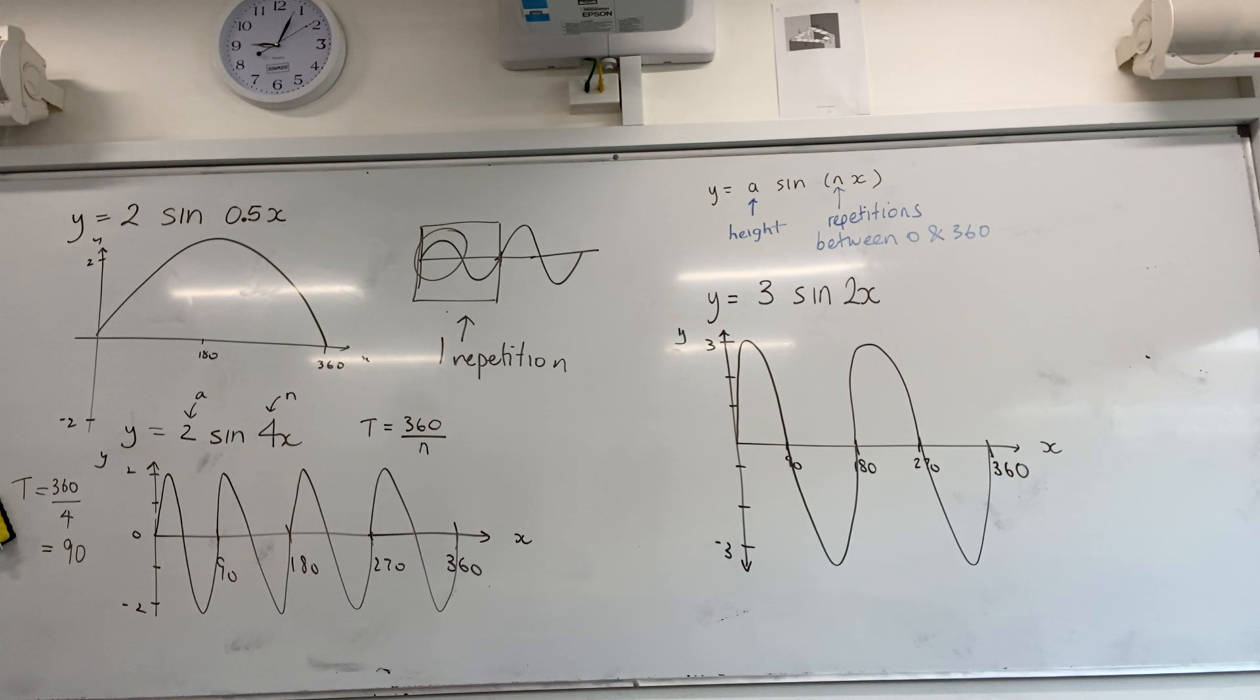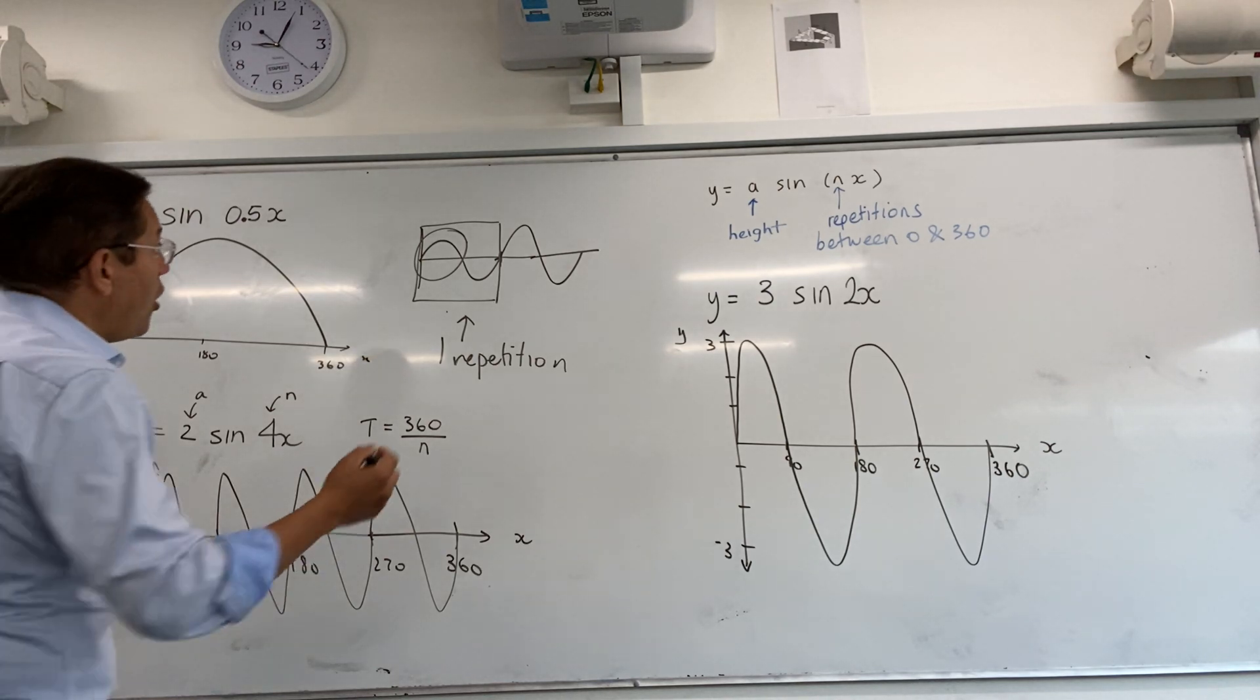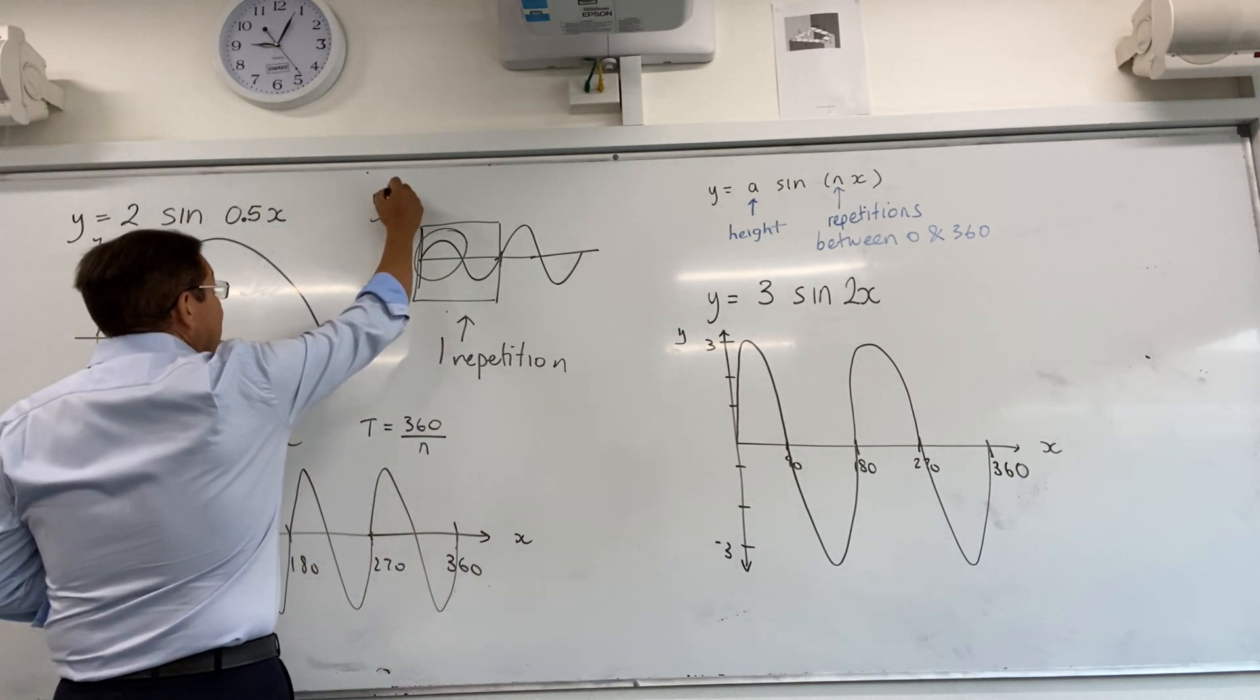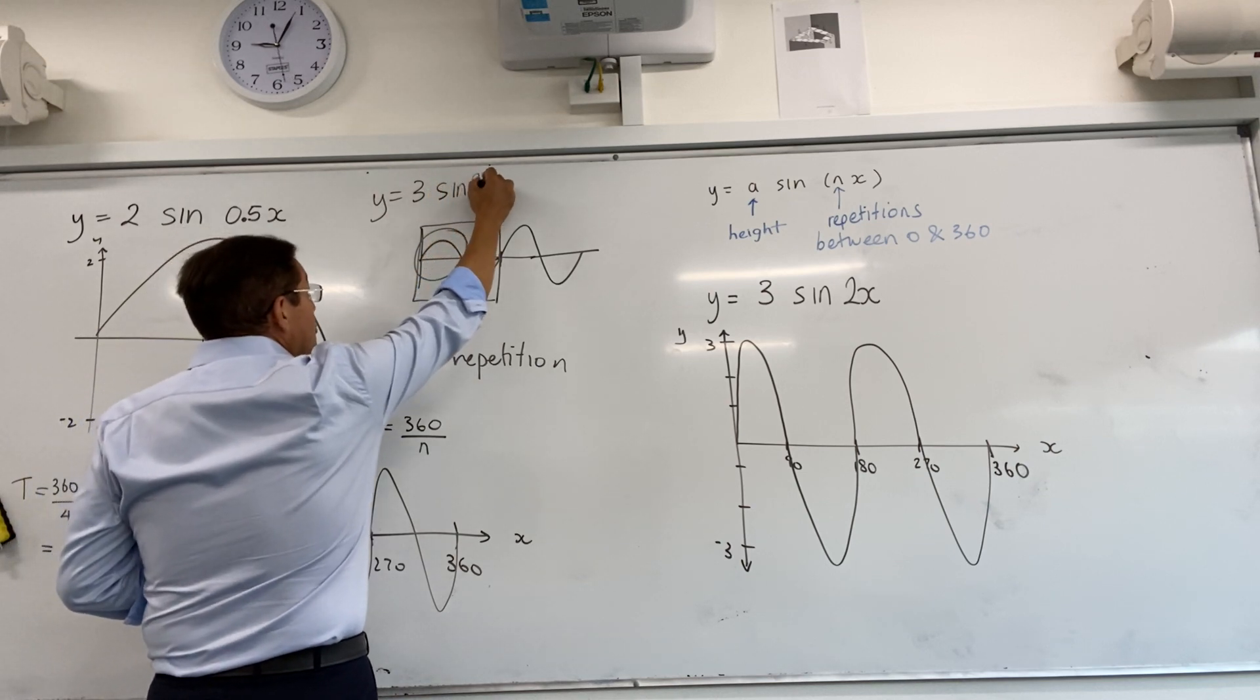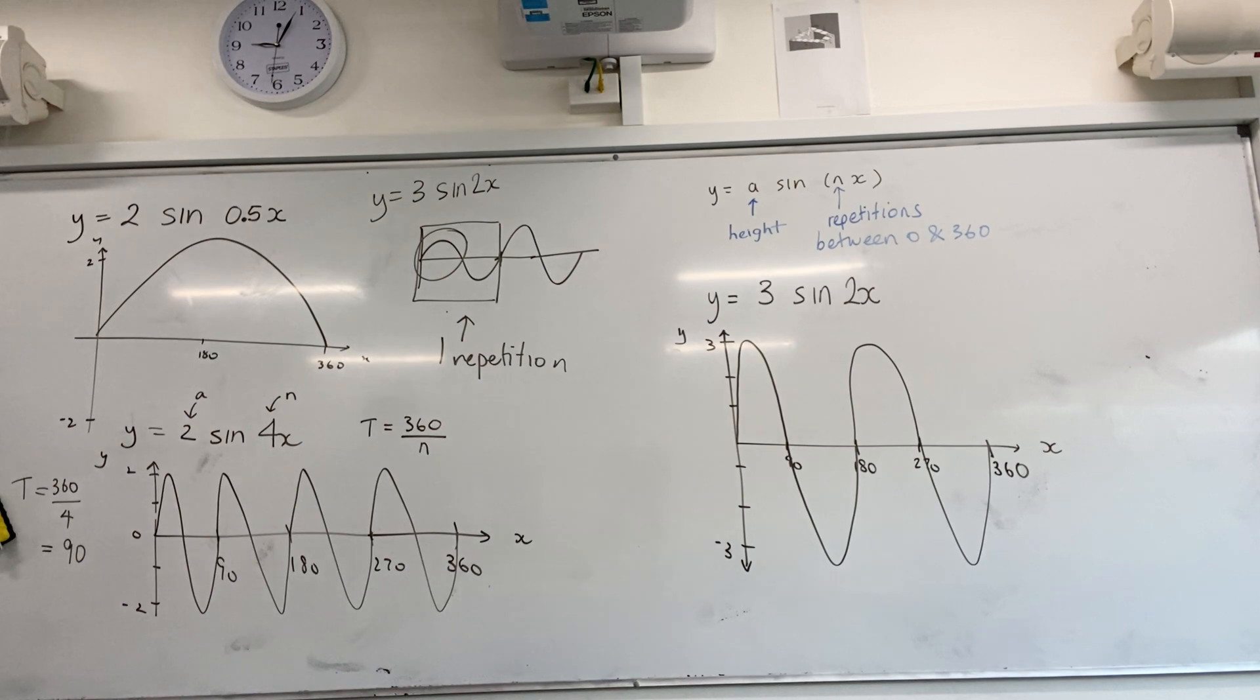The other thing they could do is they could say, write the equation of a sine curve with an amplitude of 3 and a period of 180. And if they did that, you would have to say, oh, that is y equals 3 sine 2x, because if the period is 180, two repetitions are going to fit between 0 and 360.